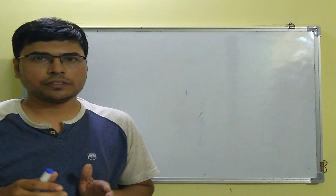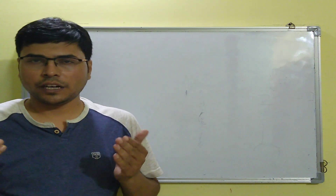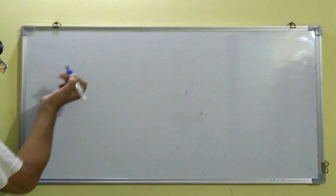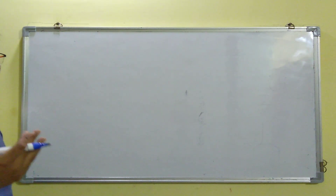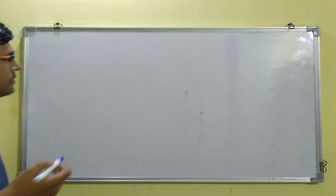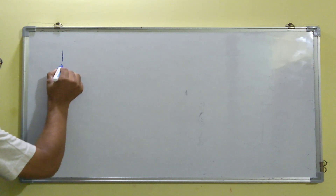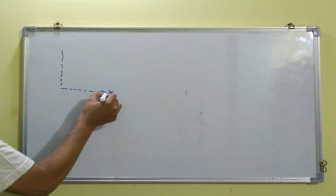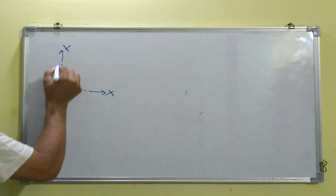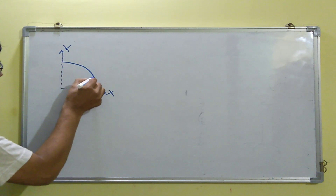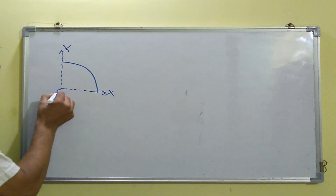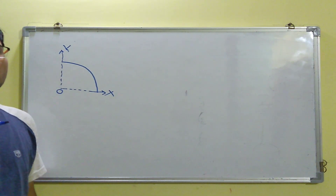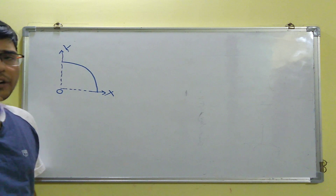The first thing we need to do is define our coordinate system. Let's pick our axes like this — this is my x-axis, this is my y-axis — and the quarter circular ring is lying like this. Now first we try to find out where exactly the center of mass might be lying.